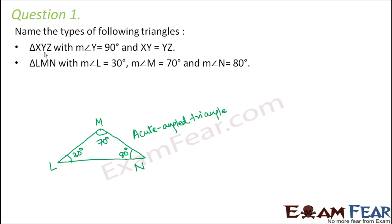Next one is triangle X, Y, Z with angle Y is equal to 90 degrees. So let's draw a 90 degree angle. So this is 90 degrees and this is angle Y, and X Y is equal to Y Z. So if this is X and this is Z, so X Y is equal to Y Z.